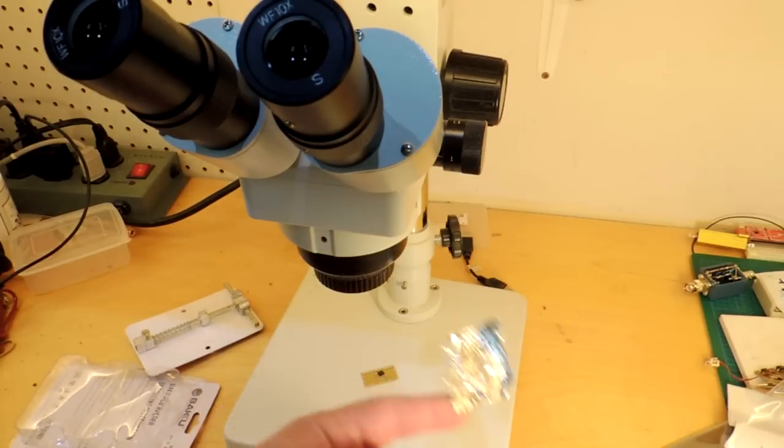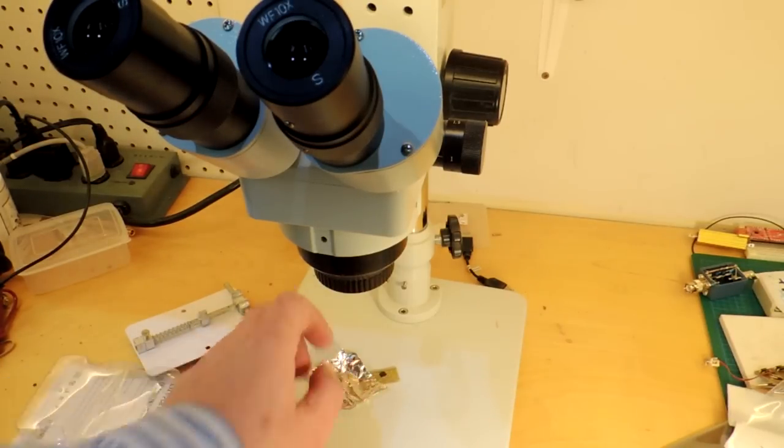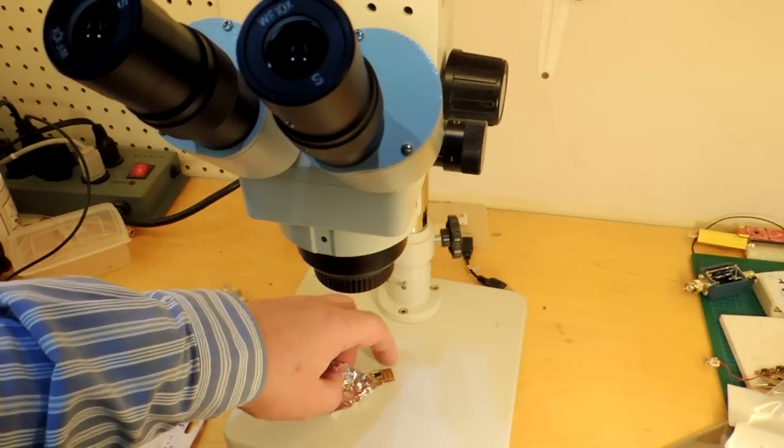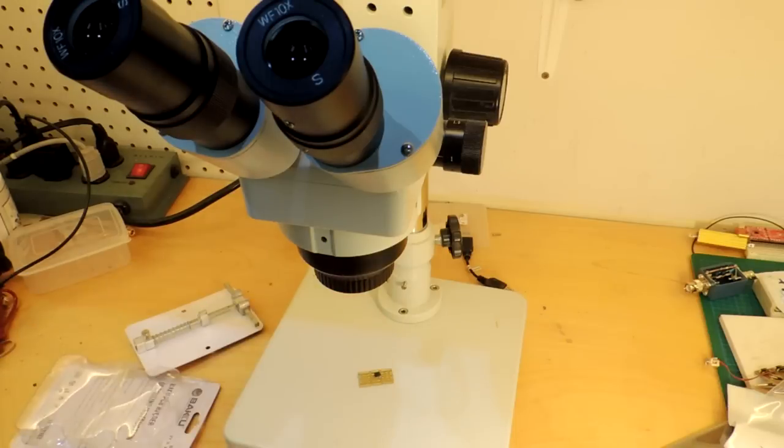Inevitably if you try to do any soldering on surface mount components, you have to tack the board down a little bit, otherwise you end up chasing it around the field of view, which is a bit of a bother. Sometimes you get glue residue and such.